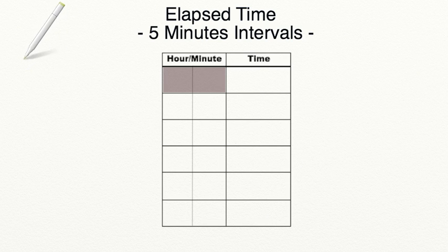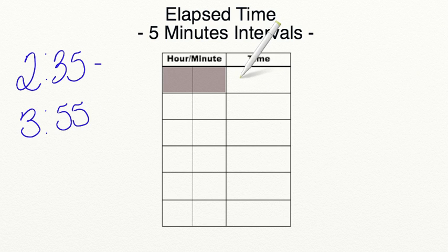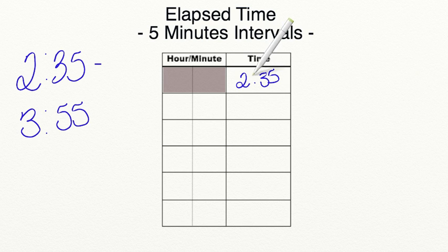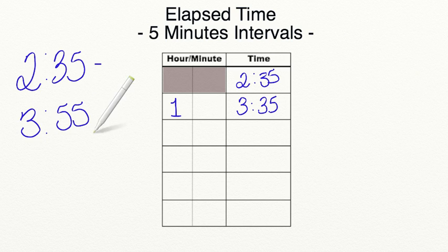Let's find the amount of time between 2:35 and 3:55. We start similarly to the number line — we put in our start time, 2:35. Then we see how many whole hours we can use. From 2:35 to 3:35 is one full hour, so I'll add one hour in our hours column. From 3:35 to 4:35 would be past our end time, so we need to move into five-minute intervals.